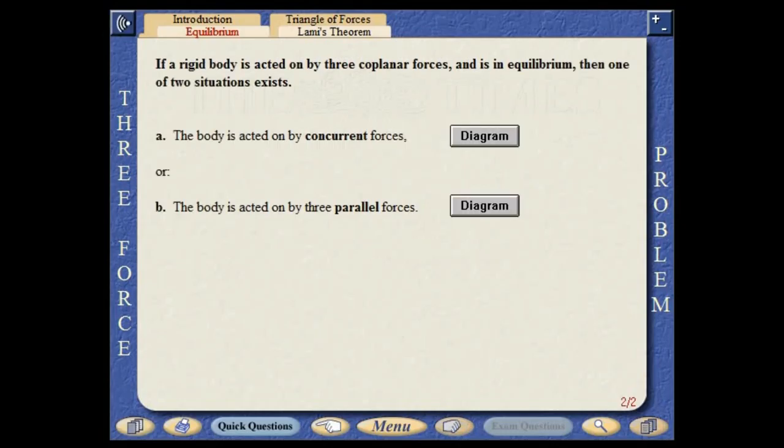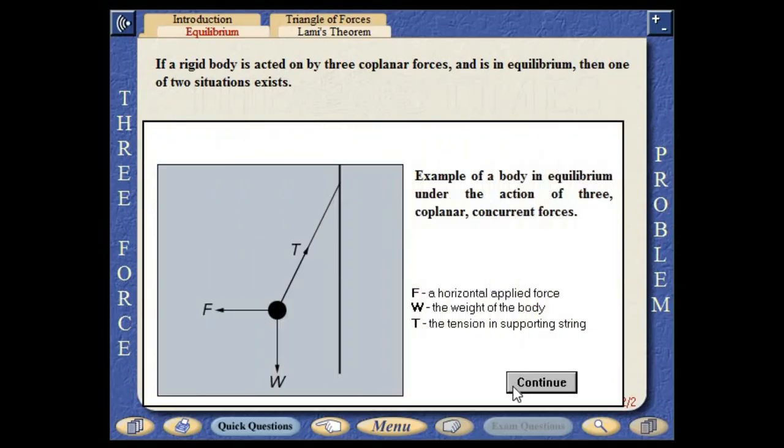If a body is acted on by three coplanar forces and is in equilibrium, then one of two situations exists. Either the body can be acted on by concurrent forces, or the body may be in equilibrium as a result of parallel forces acting.